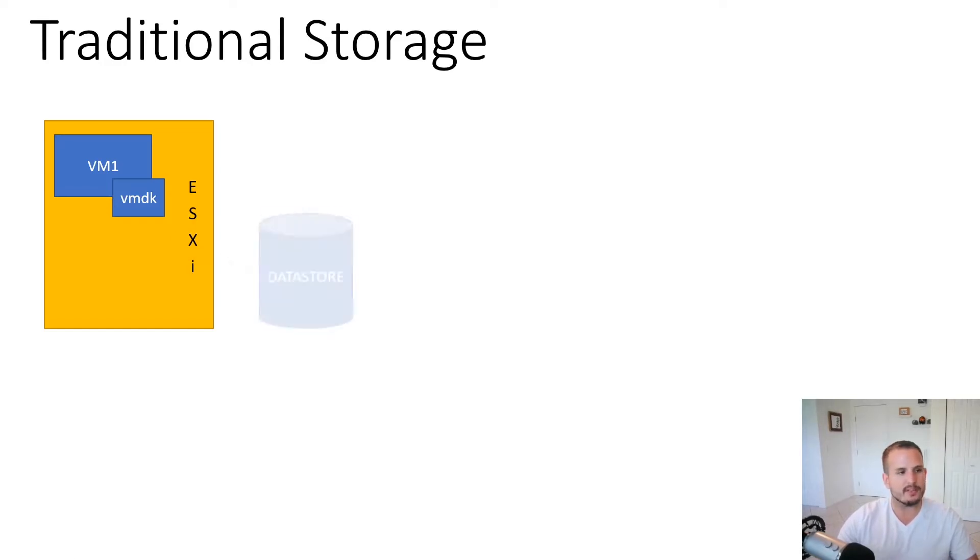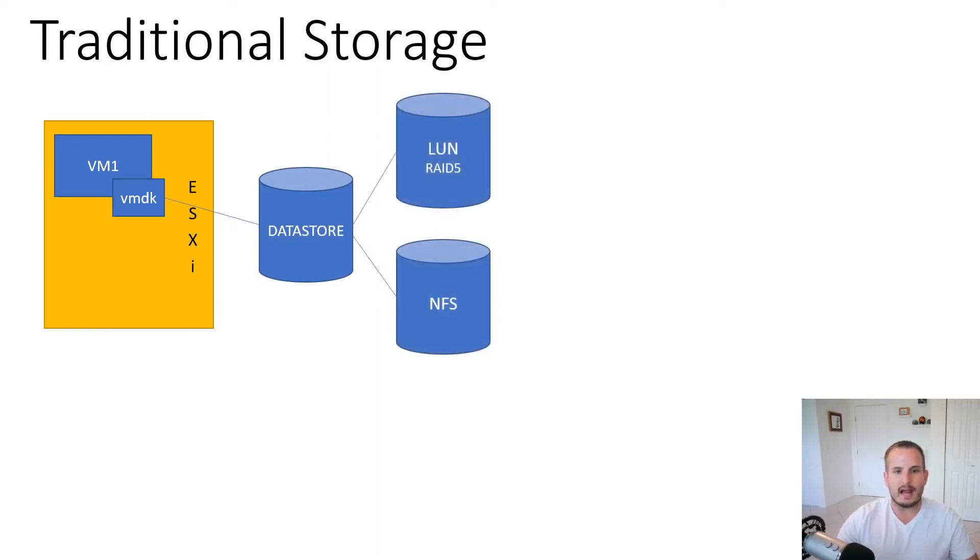That virtual machine data is going to be stored in some sort of data store that's backed by some sort of iSCSI LUN or an NFS data store. Either way, the storage has to be predefined with some sort of RAID protection. For example, let's say our data store is configured with RAID 5, as you can see on the diagram here. It works absolutely great, works as intended.